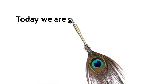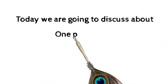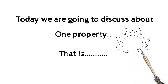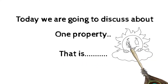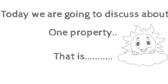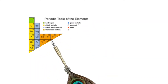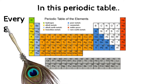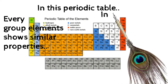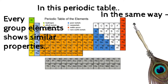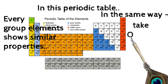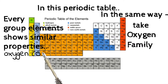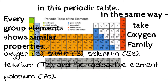Today we are going to discuss one property — a simple but very important property. Check the periodic table. In this periodic table, every group's elements show similar properties. Take the oxygen family: oxygen, sulfur, selenium, tellurium, polonium.